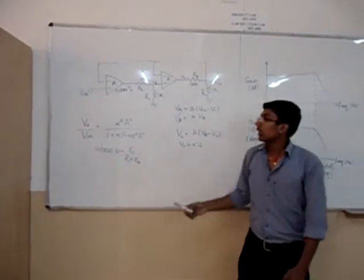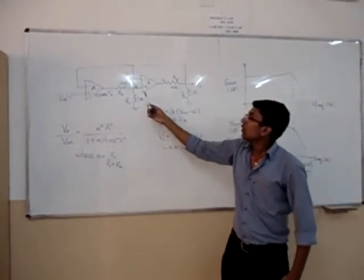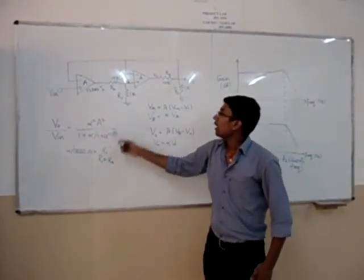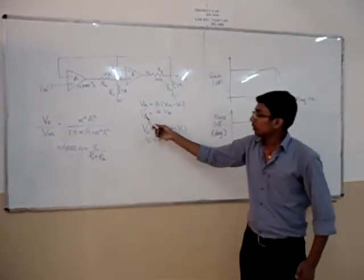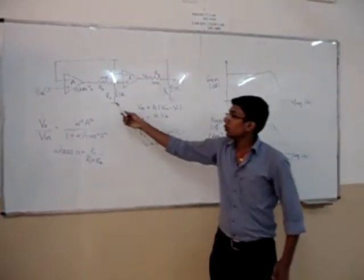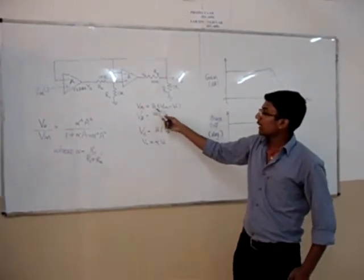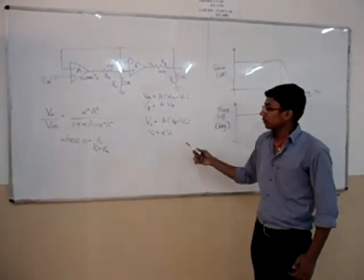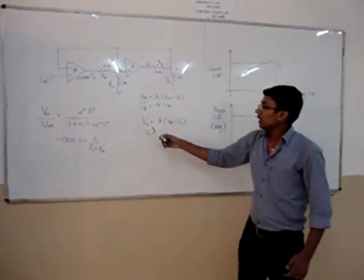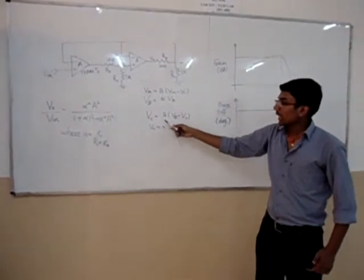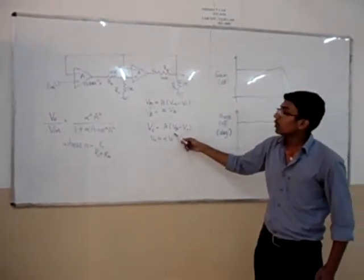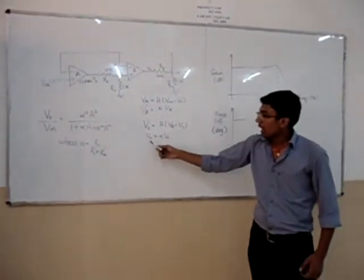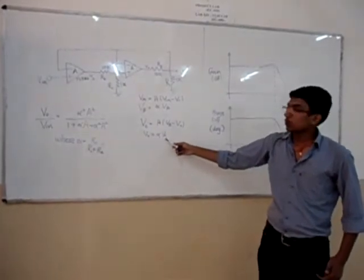The output of first opamp is fed to the input of second through an attenuator alpha and relation VB is equal to alpha VA stands to VA is equal to A into VE minus V0 where A is opamp loop gain and the output of second is Vc equal to A into VB minus V0 where VB is the input to the second opamp and V0 is equal to alpha Vc also.